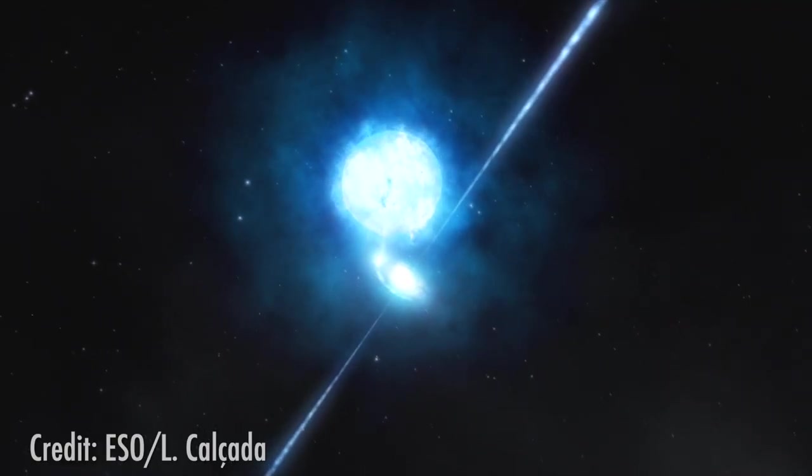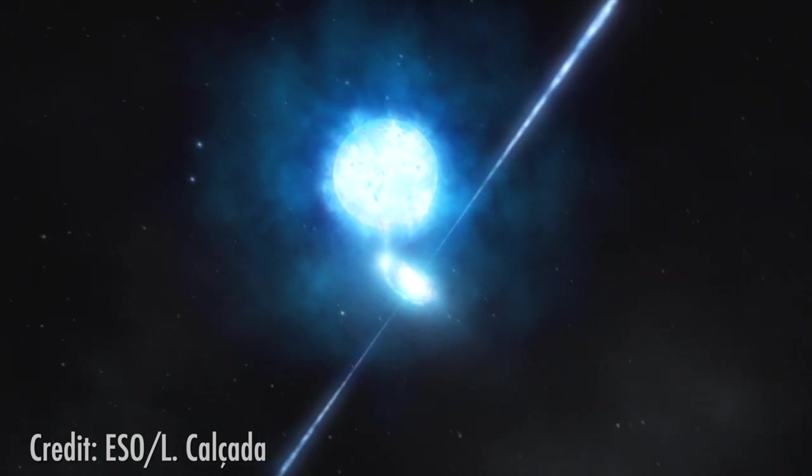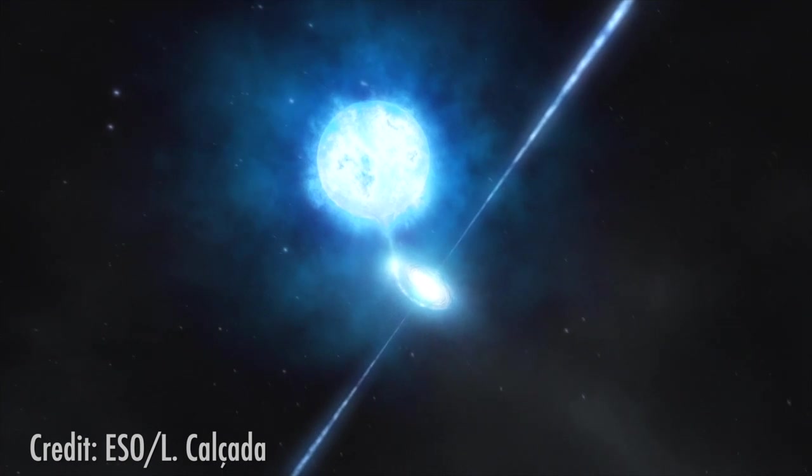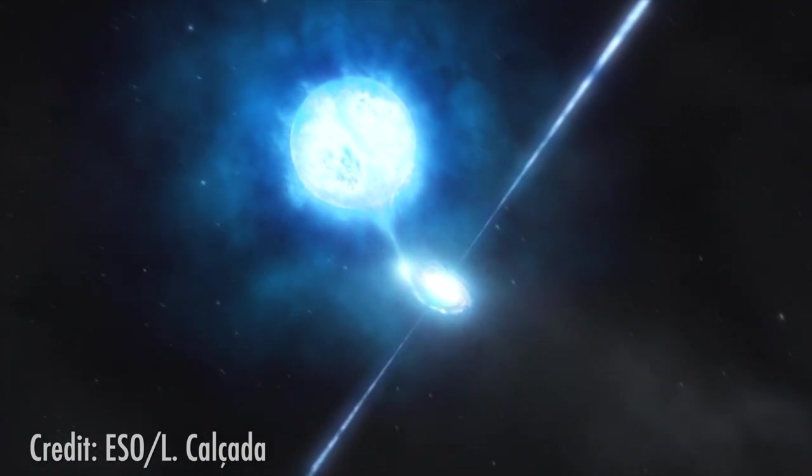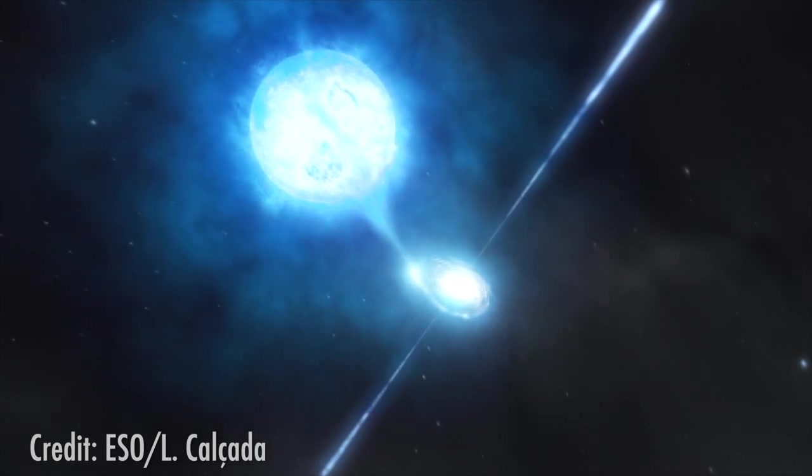So you're absolutely right that we use this word pulsar. It's really rotation. So we often describe them as being interstellar lighthouses. So they're very highly magnetized. And near that North and South Pole, you can get electrons and positrons - charged particles, electrons we find in atoms, positrons, their antimatter equivalent. And they can be accelerated, so they move very quickly, close to the speed of light along these magnetic field lines. And when they do that, they give rise to radio waves.